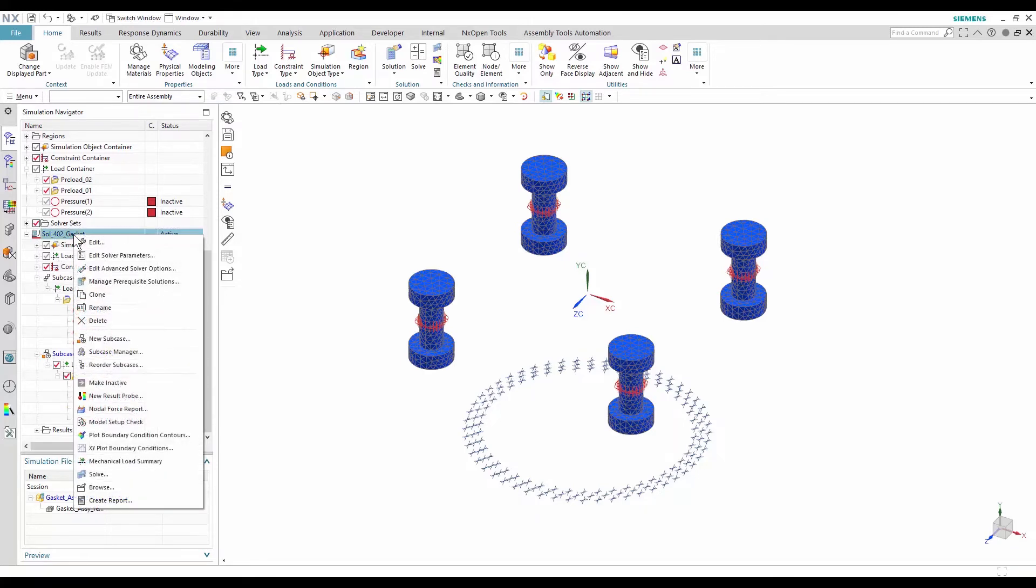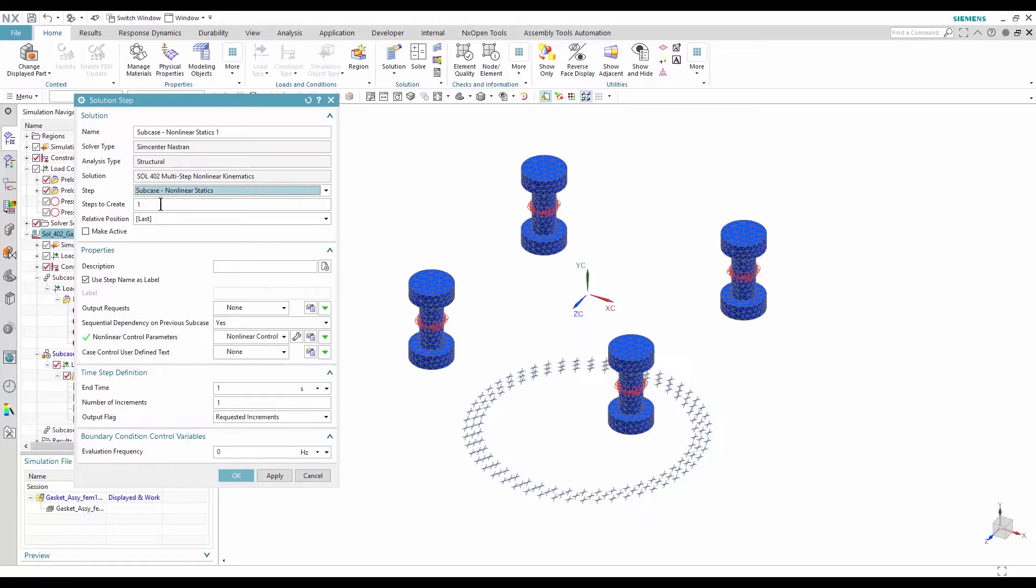I then create a static subcase where I define a pressure in the internal faces of the tube and the cap.